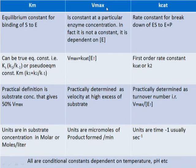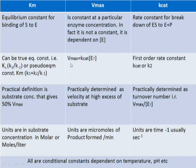Regarding Vmax: is it really a constant? Vmax is constant only if enzyme concentration is maintained constant. In fact it is not a true constant — it depends on total enzyme concentration. Different aliquots or preparations of enzyme will give different Vmax values. The true value is Vmax = Kcat times Et, and it is practically determined as the velocity at excess substrate concentration. Units of Vmax are micromoles of product formed per minute.